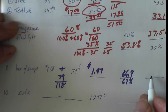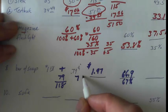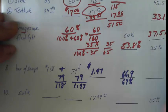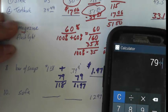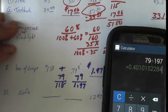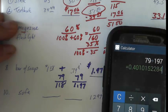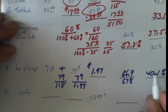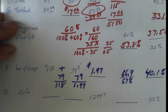For percent markup based on selling price, we use markup 79 over selling price 197. So 79 divided by 197, moving the decimal over 2 spots, gives us 40.1%. Pretty straightforward — it just takes a little time to work through.